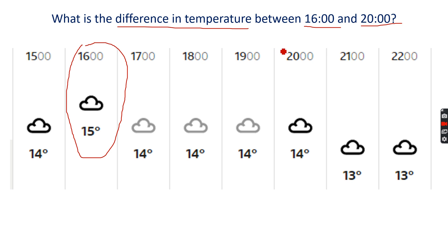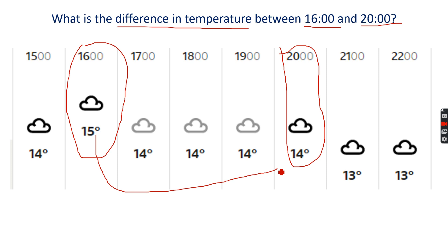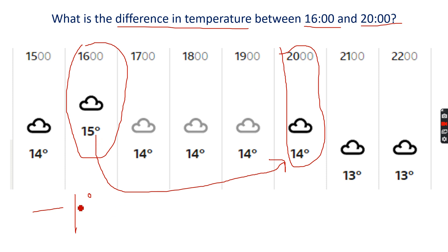At four o'clock versus eight o'clock, the difference appears to be going down from 15 degrees to 14 degrees. So the difference in temperature is minus one degree Celsius. Probably I don't need to take an extra layer — it's just getting one degree colder. The difference in temperatures is minus one degree.